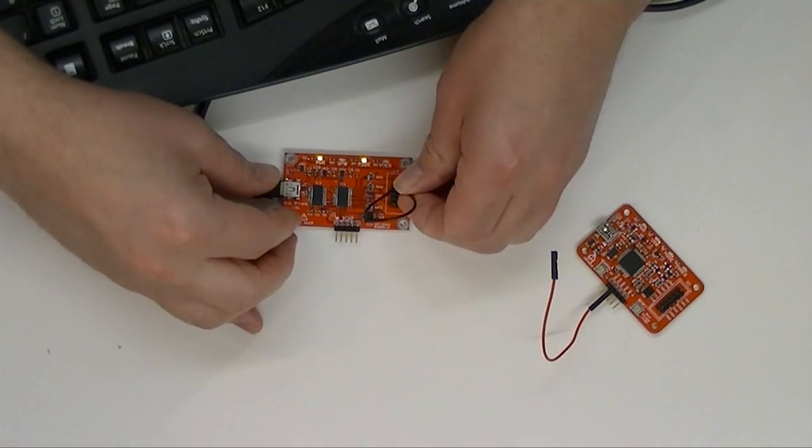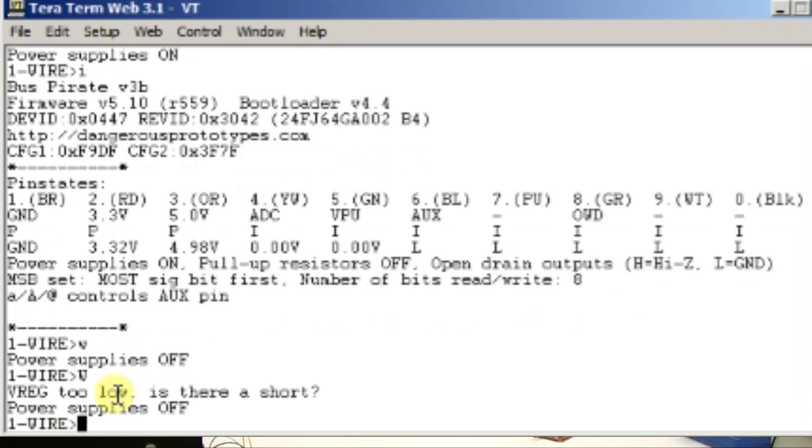Now we'll disable the power supplies and simulate a short circuit to show you what the warning looks like. We'll put a jumper from the 3.3 volt supply to the ground pin, and then we'll turn on the power supplies. The Bus Pirate terminal immediately says voltage regulator's too low, is there a short, and it turns the power supplies off. Hopefully this saved our project.